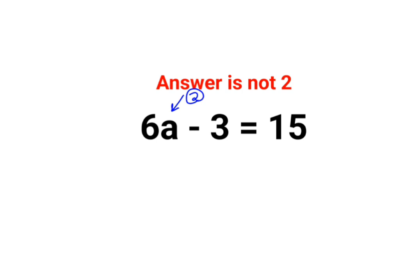Why? Because they thought that here there is negative 3, so here also we should do negative 3. So 6a becomes 12, and then dividing both sides by 6, you get the answer as 2. That is incorrect.